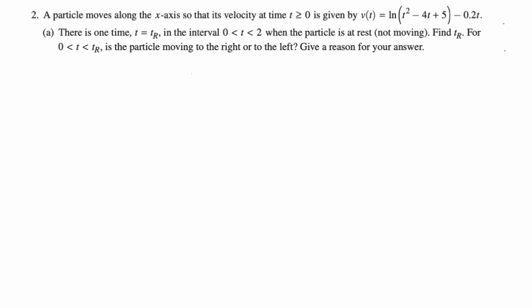Part A, there is one time t equals t sub r in the interval 0 to 2 when the particle is at rest, which means not moving. Find t sub r. For 0 less than t less than t sub r, is the particle moving to the right or to the left? Give a reason for your answer. Everything about this to me says graph the velocity. So that's what I'm going to do.